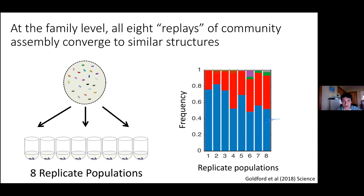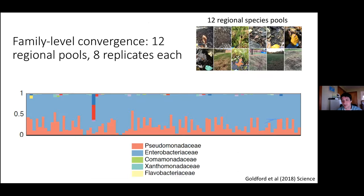This is reminiscent of what was observed in natural systems — a lot of variation at the species level, but much more convergence at the level of family. When we repeated our experiment with 12 different regional species pools, eight replicates each, and plotted the family-level composition for all experiments, we found very strong reproducibility. Most communities were dominated by the same two families — Enterobacteriaceae in blue and Pseudomonadaceae in red — with other rare families appearing in some but not others, and even the quantitative ratios of the two dominant families were quite similar.